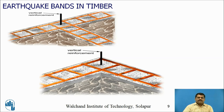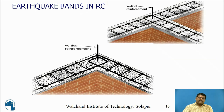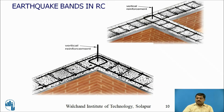Earthquake bands can also be constructed using timber, which is still used in rural areas. A vertical bar is provided, timber strips are placed, and concrete or mortar is cast. If steel reinforcement is used, hooks are used to arrange the bars and concrete is cast. This ensures proper integrity of the walls in both horizontal and vertical directions. This is the detailing of earthquake bands.